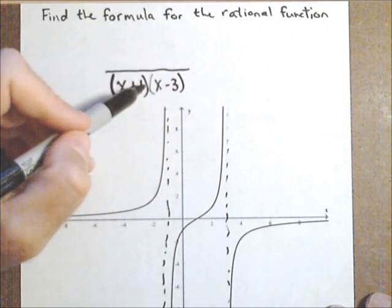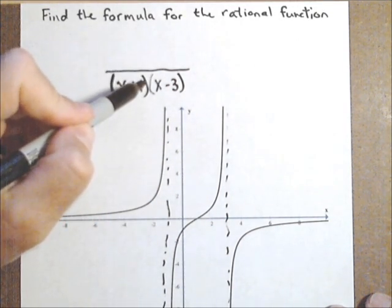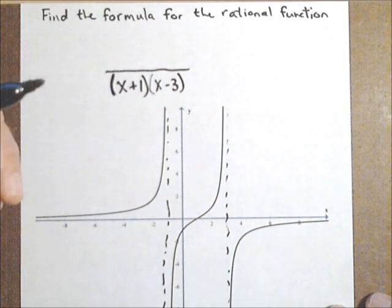These switch signs, so they'll definitely have an odd multiplicity. So we'll start with a multiplicity of 1 and we can check at the end if we need to change it.